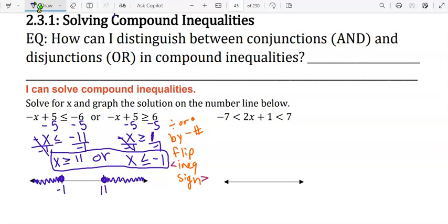The next one is an AND compound inequality: -7 < 2x + 1 < 7. This time, instead of solving separately, we'll solve this all together.